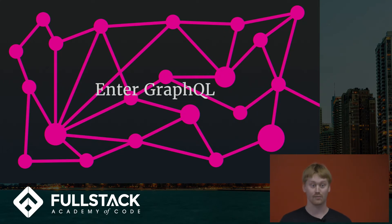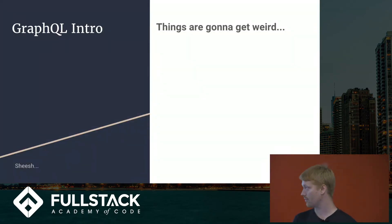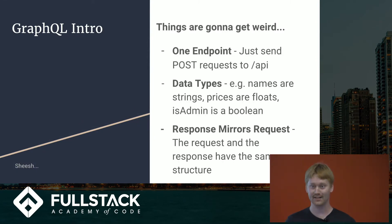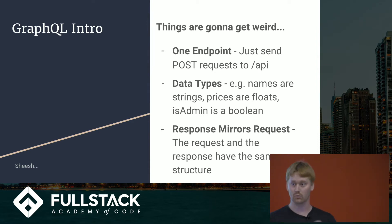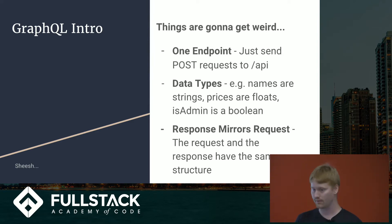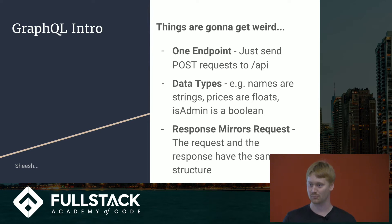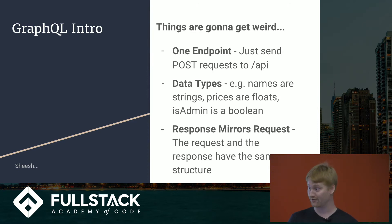GraphQL is supposed to be a solution to some of these problems with RESTful APIs — it's supposed to be a lot more agile. Things get a little weird. Unlike RESTful APIs where you have a whole bunch of different endpoints, there is only one endpoint for a GraphQL server, and all you do is send POST requests to it. There are no GET, no DELETE, no PUT — just POST requests to one endpoint, and everything you need from the GraphQL server is inside that POST body.